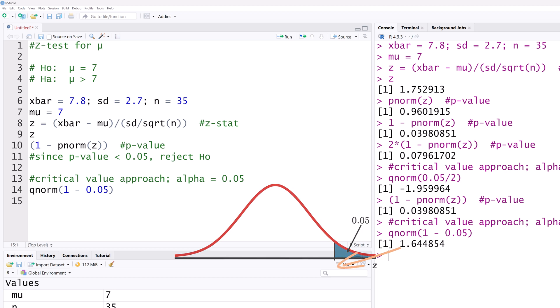That is, for the right tailed test, the result is significant if a Z statistic is greater than 1.645. Since this statistic of 1.75 is greater than this critical value of 1.645, we will again reject the null hypothesis.